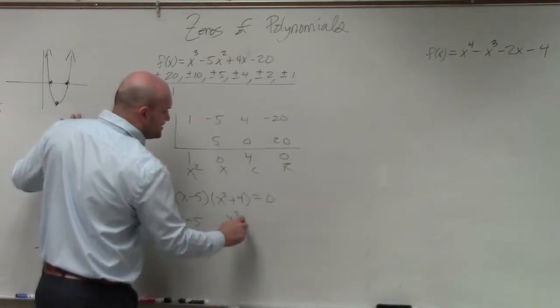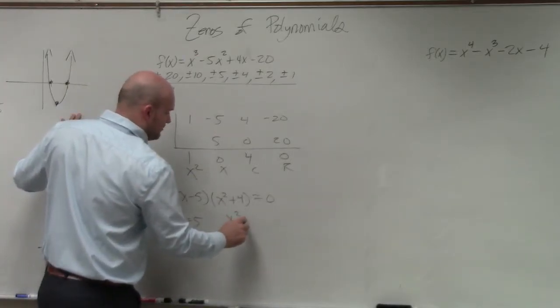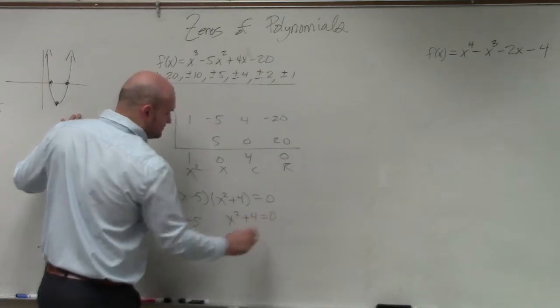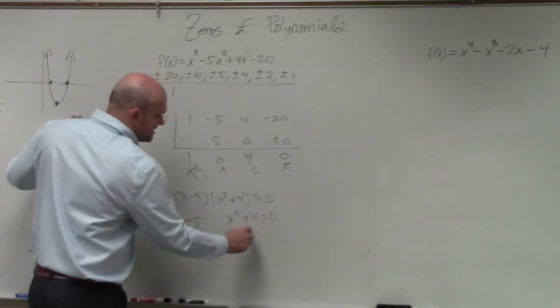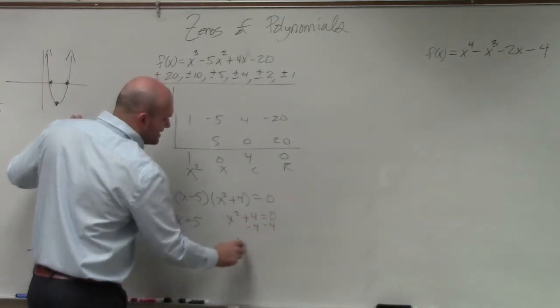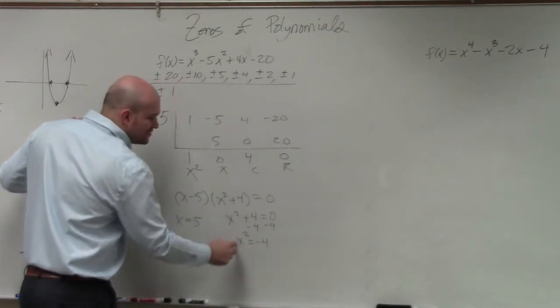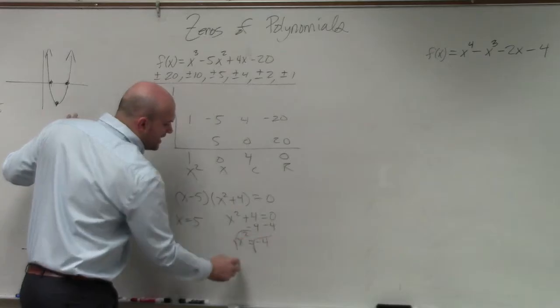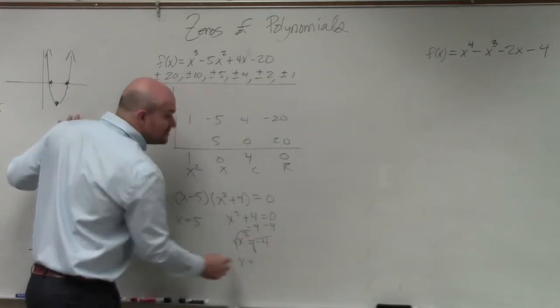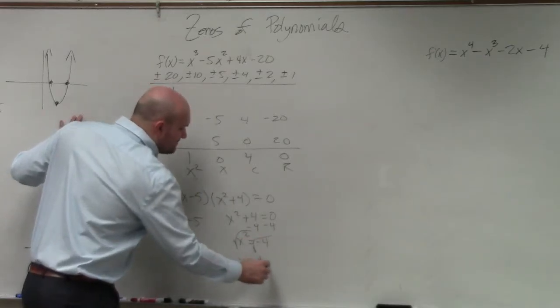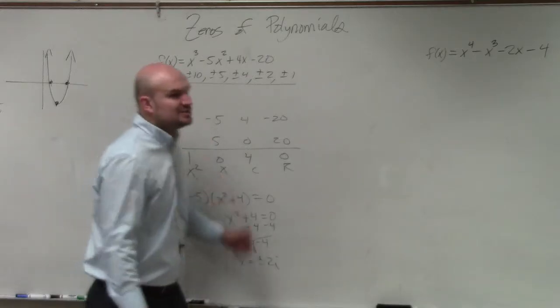So therefore, but now you need to use the square root method, which is, again, something that we talked about in our focus lesson. Subtract 4 on both sides. x squared equals negative 4. And then to undo the squaring, you have to take the square roots. And you have to remember, whenever you introduce the square roots, you have to include plus or minus 2i.